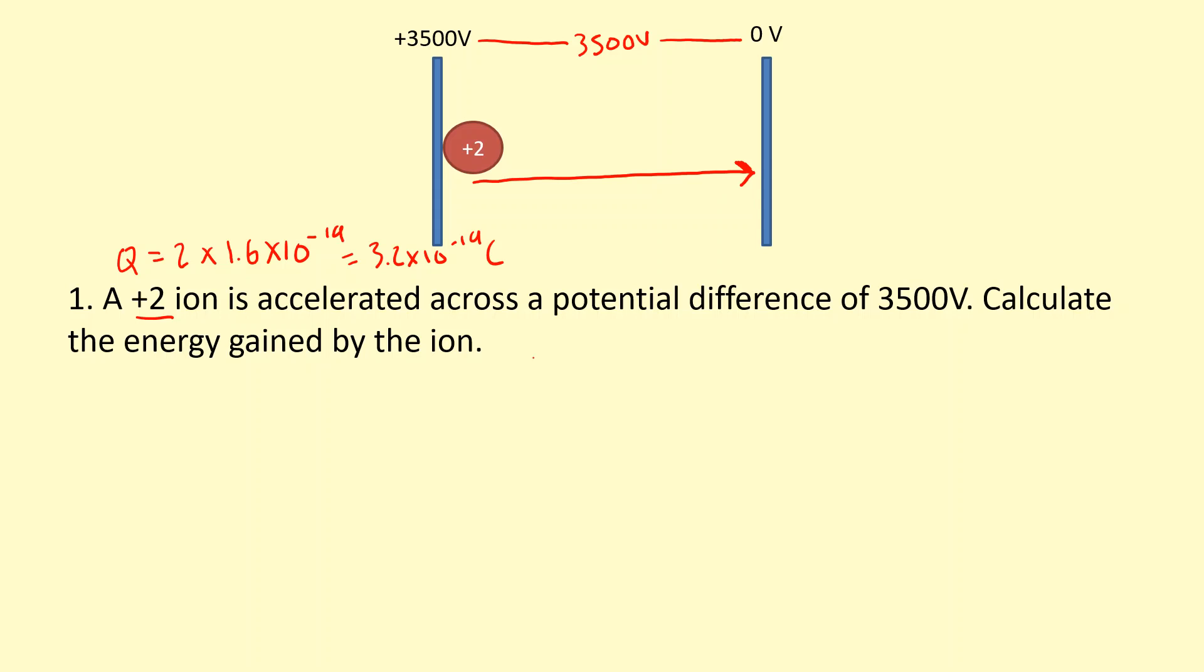...we're going to use - I'm going to ignore the delta sign - is potential difference times charge gives us the energy. So 350 times 3.2 × 10^-19 coulombs gives us 1.12 × 10^-15 joules of energy gained by that +2 ion.